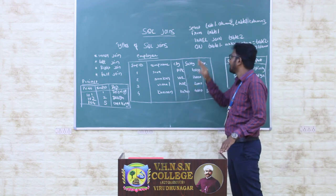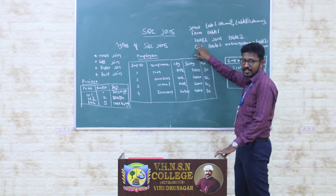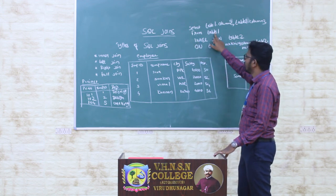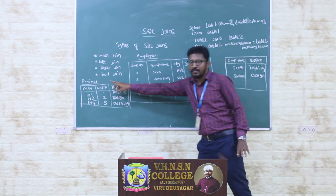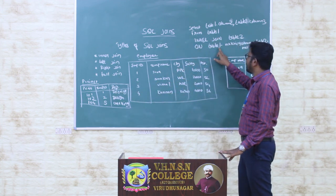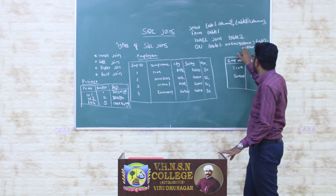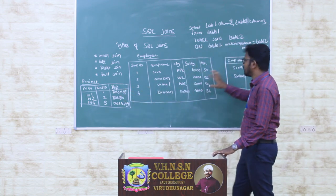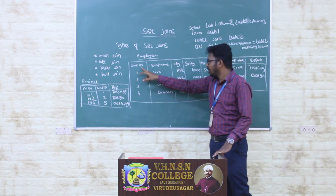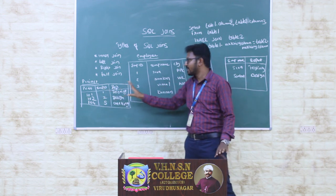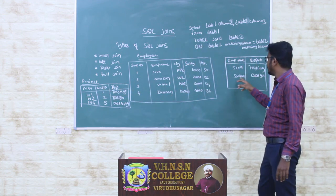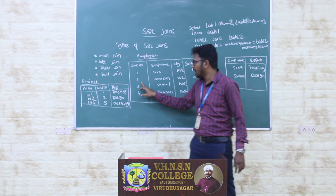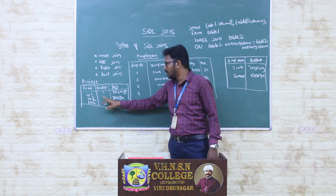The two tables are joined together. We specify INNER JOIN, then Table 2. Table 1 is called employee and Table 2 is called project. The ON condition specifies the matching column: Table 1 matching column equals Table 2 matching column. The matching column here is Employee ID in both tables — employee table Employee ID equals project table Employee ID.